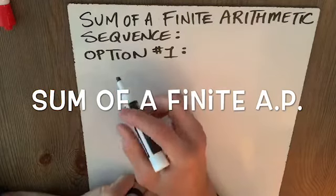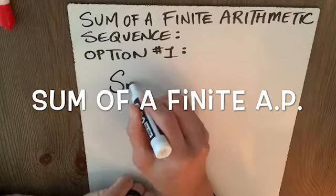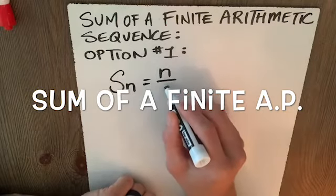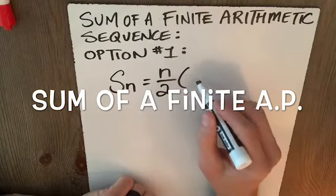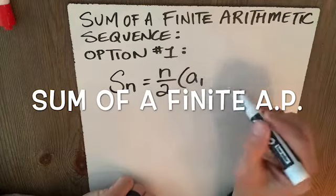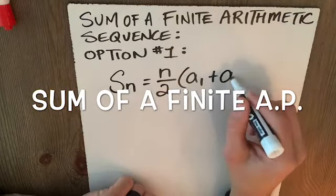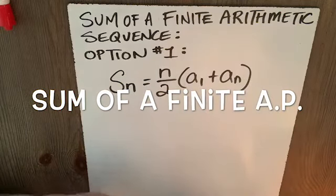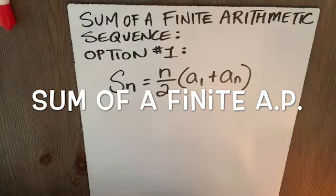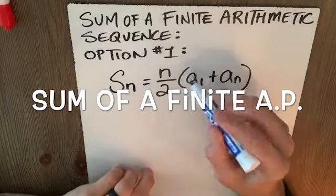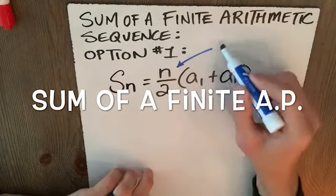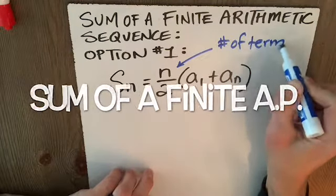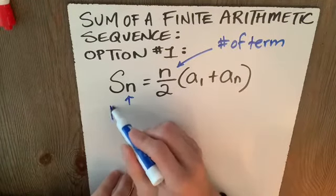To find the sum of n terms, we can say it's the number of terms n divided by 2 times the quantity a₁, the first term, plus aₙ, which is the last term. So let's dissect this. What are the parts that we need to know? We need to know the number of terms that you want to sum.